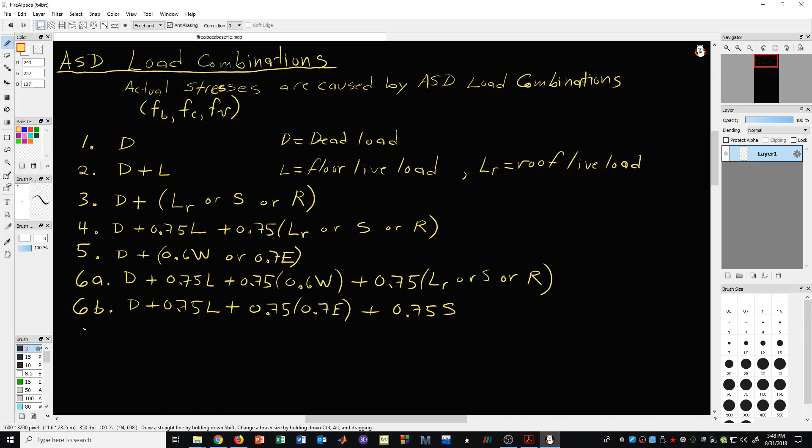We have two more load combinations. We have 7 and it is 0.6 D plus 0.6 wind. And then we have, lastly, load combination 8, which is 0.6 D plus 0.7 E.